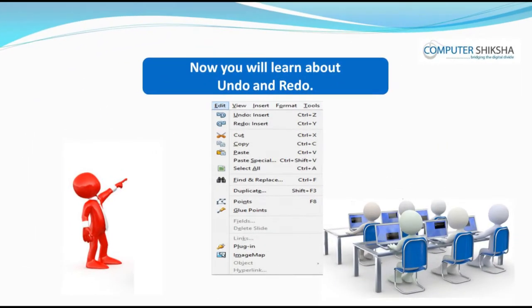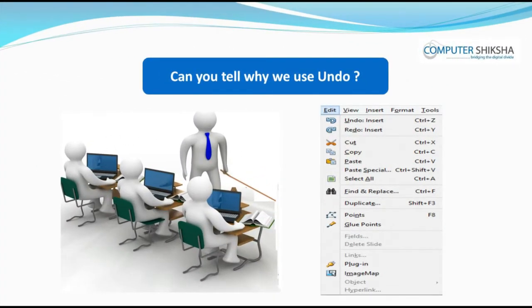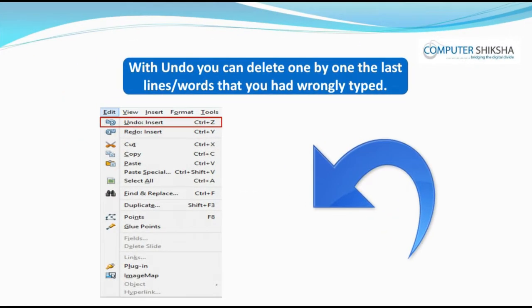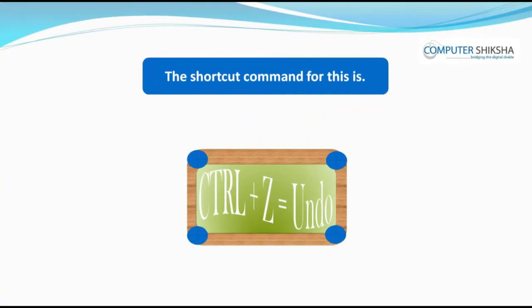Now you will learn about undo and redo. Can you tell why we use undo? Undo is an option by using which you can correct any mistake that you may have made on your page or slide. With undo, you can delete one by one the last lines that you had wrongly typed. The shortcut for this is Ctrl+Z.